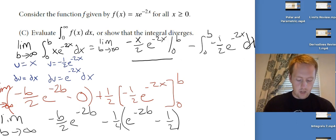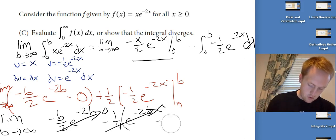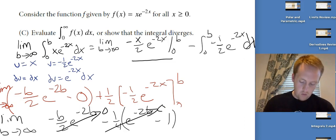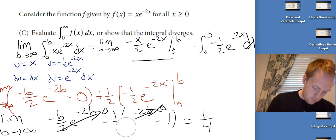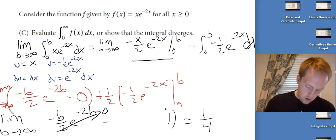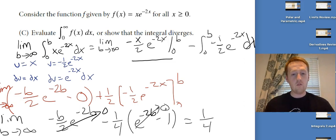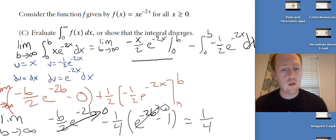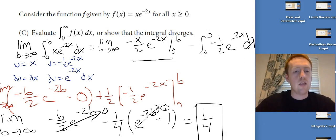Okay, so as b goes to infinity, this is going to go to 0. This is going to go to 0. Sorry, this should have been a 1, because I forgot I factored out that negative 1/2. So then all I'm left with is -1/4 times -1, so this is positive 1/4. So it's an integration by parts and some improper integrals there. It's a little bit of a cumbersome problem, but I mean, it was an FRQ question. That was redundant. Free response question question.